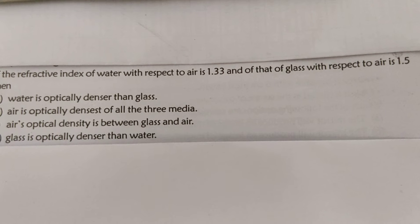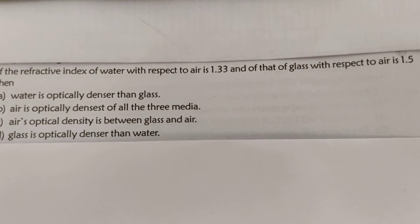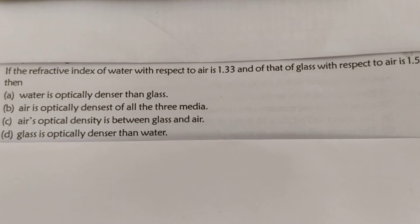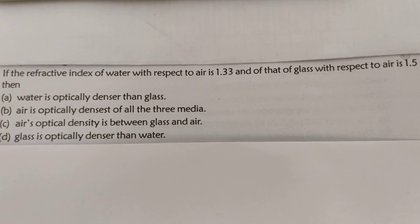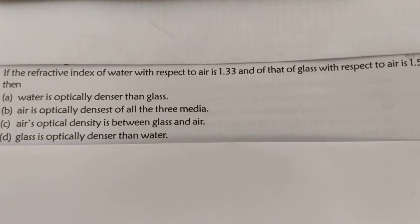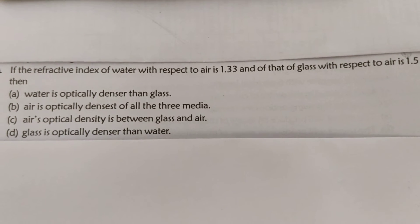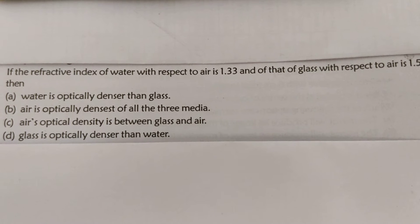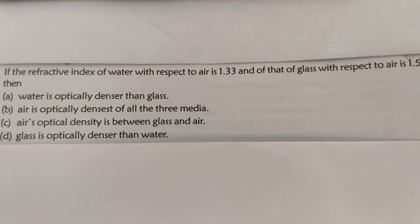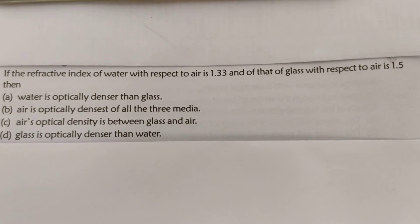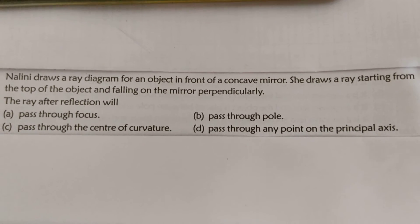The refractive index of glass with respect to air is greater than that of water with respect to air, so we can conclude that glass is optically denser than water. Looking at the options, option D is correct: glass is optically denser than water. When we say optically denser than water, it means the speed of light is more in water than in glass.